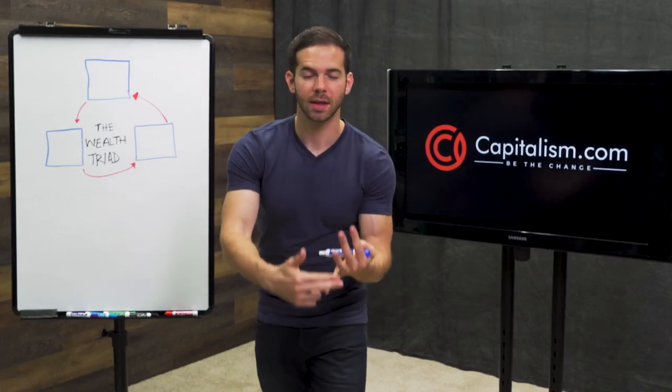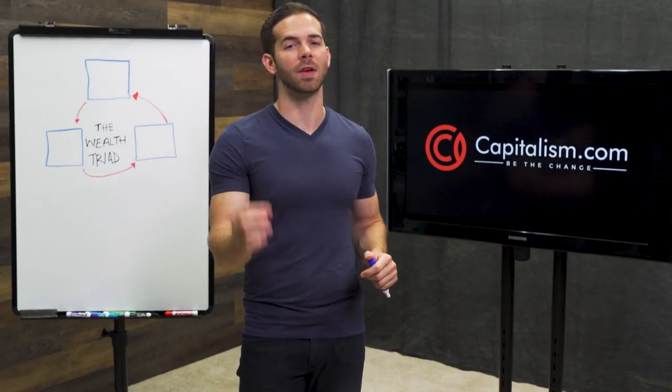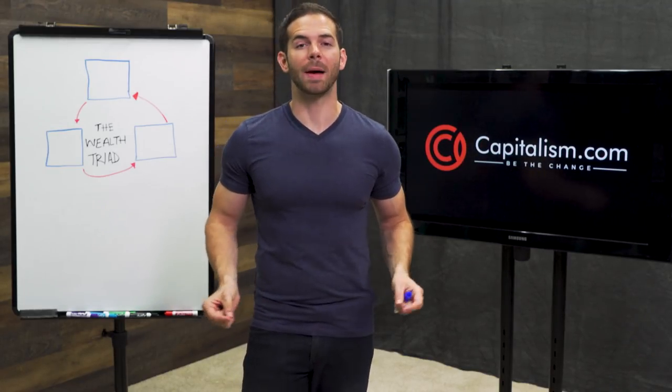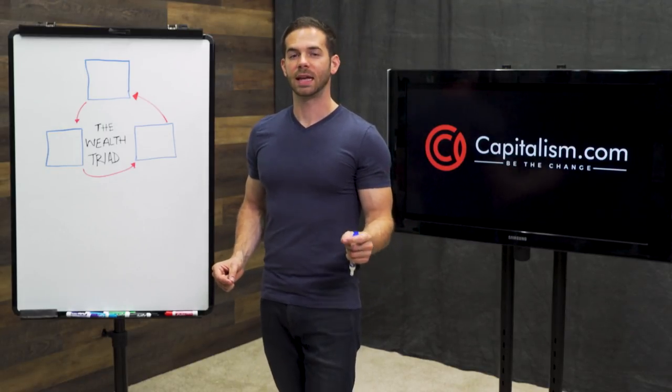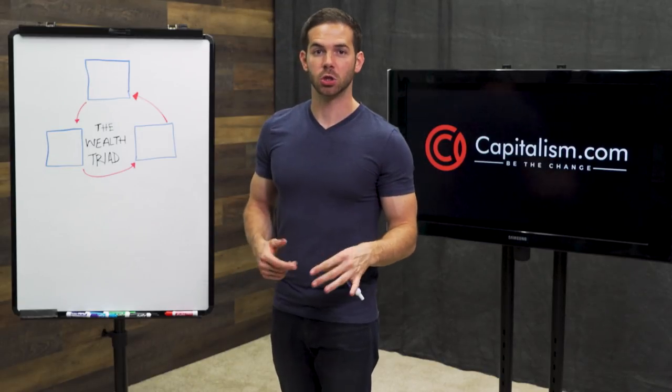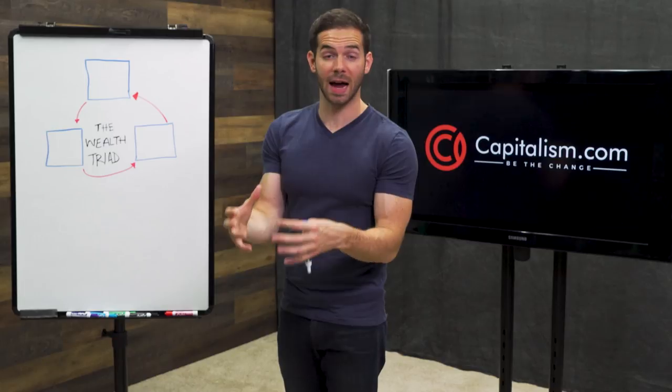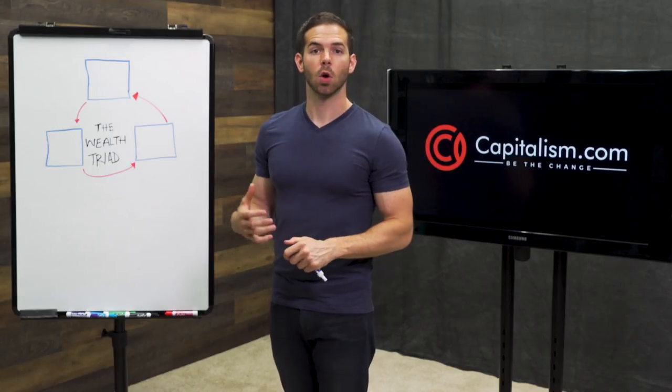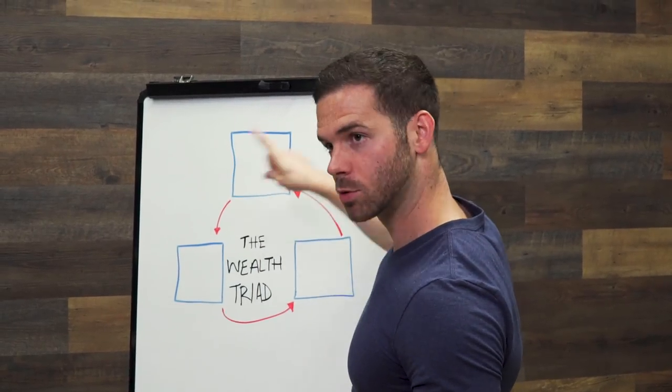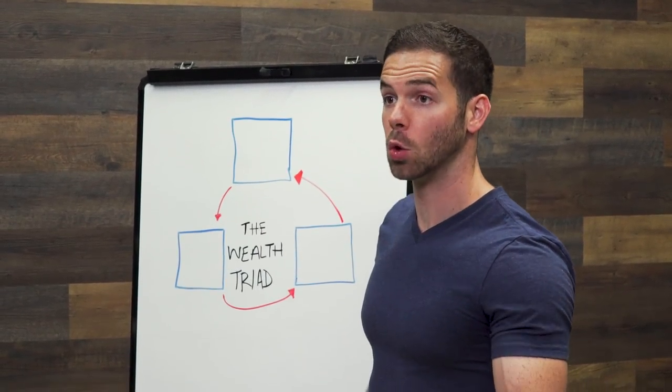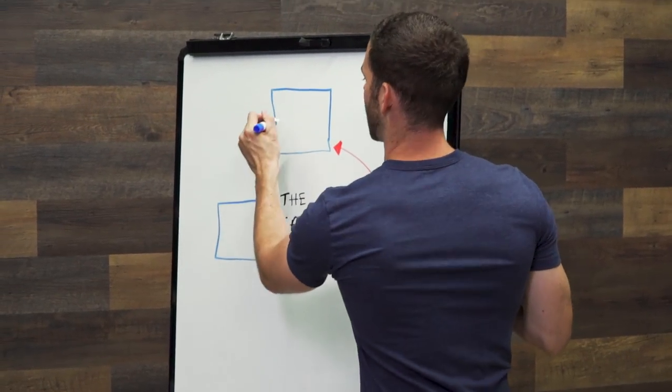First point, if you ever listen to Jim Rohn, one of the best speakers that ever lived, he will say very famously that profits are better than wages. So the first part of the wealth triad is very simply to get your first source of cash comes from profits rather than wages. That's the first piece. So at the top of the Illuminati triangle is your business or your profits rather than what you're paid at a job.